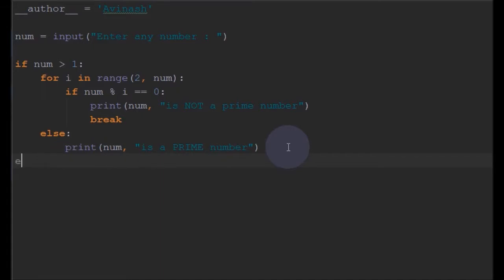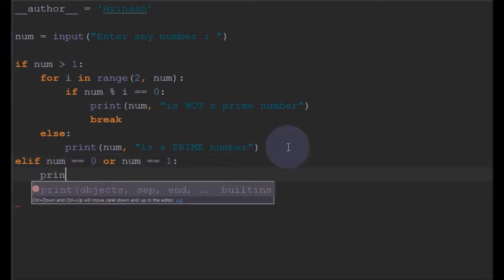when a number like 0 or 1 is entered. We'll write else if, that is called elif. Elif num == 0 or num == 1, we'll say that 'number is neither prime nor composite